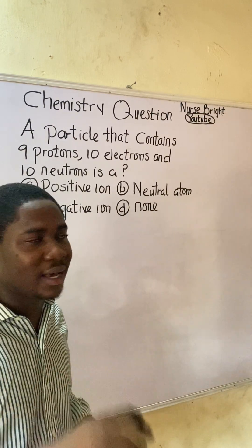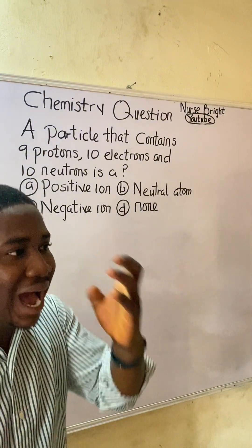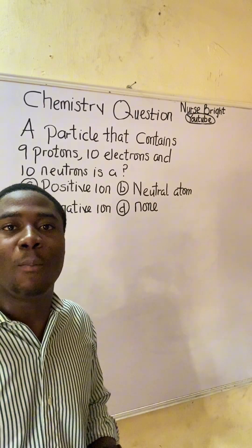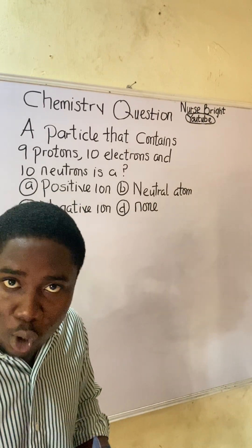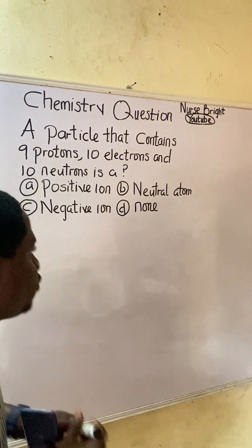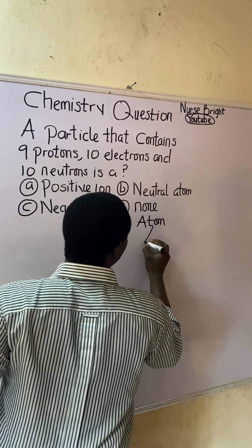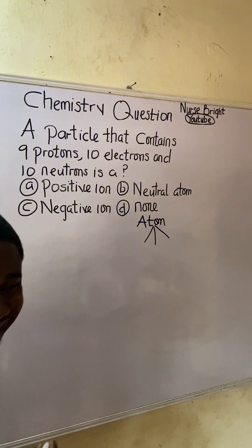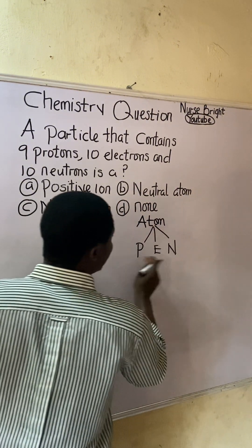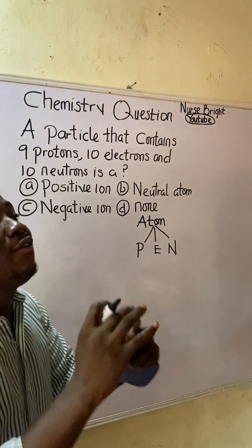This question is extremely easy. Looking at it, my mind goes to a concept in chemistry called atomic structure. Remember, an atom is made up of three important subatomic particles. I call them PEN — P-E-N — protons, electrons, and neutrons.